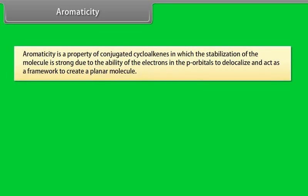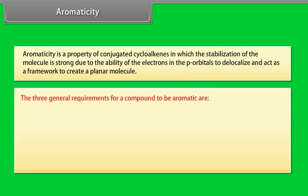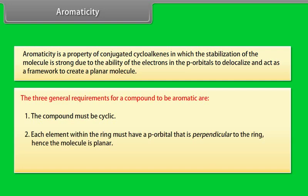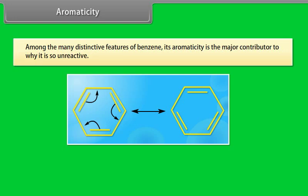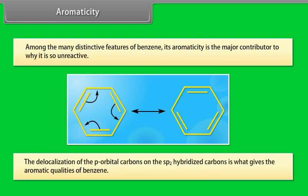Aromaticity. Aromaticity is a property of conjugated cycloalkenes in which the stabilization of the molecule is strong due to the ability of electrons in the p orbitals to delocalize and act as a framework to create a planar molecule. The three general requirements for a compound to be aromatic are: 1. The compound must be cyclic. 2. Each element within the ring must have a p orbital perpendicular to the ring — hence the molecule is planar. 3. The compound must follow Hückel's rule: the ring must contain 4N+2 p orbital electrons. Among the distinctive features of benzene, its aromaticity is the major contributor to why it is so unreactive.